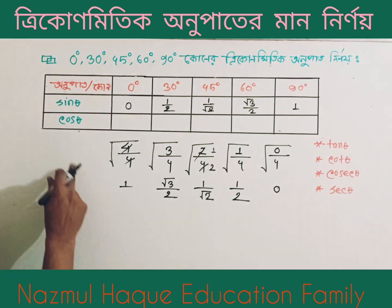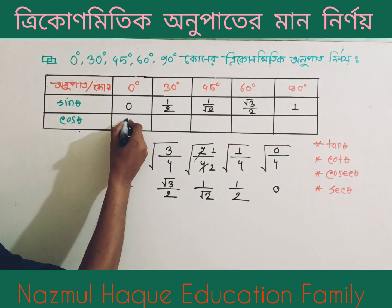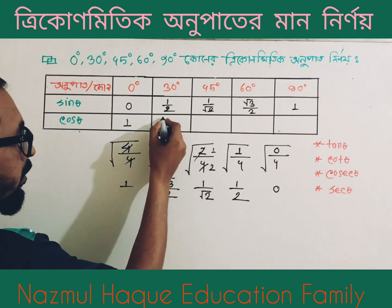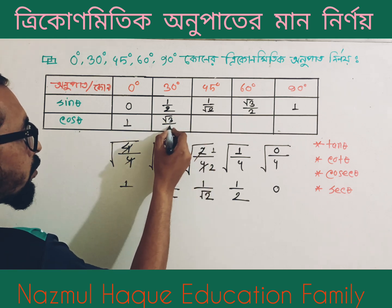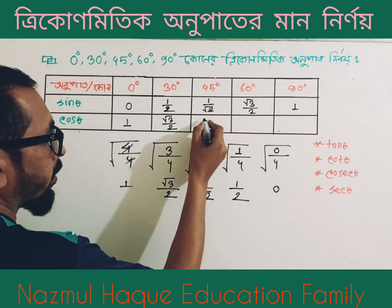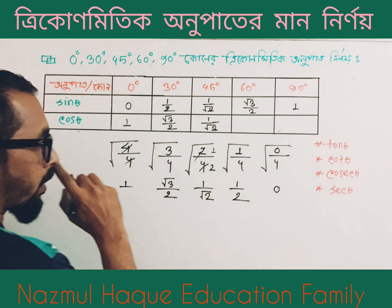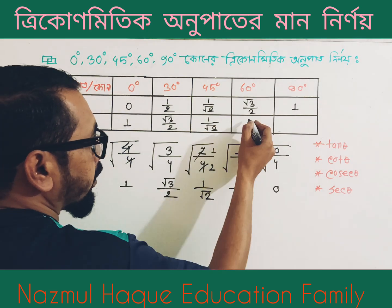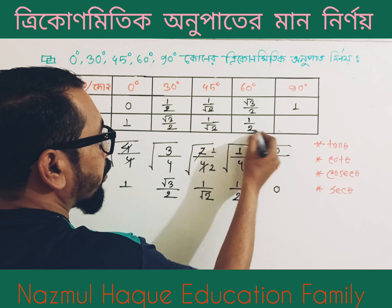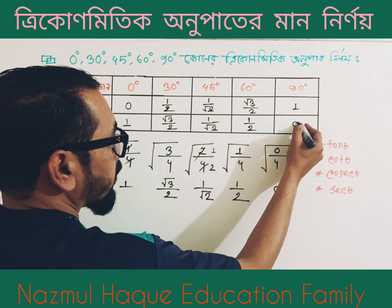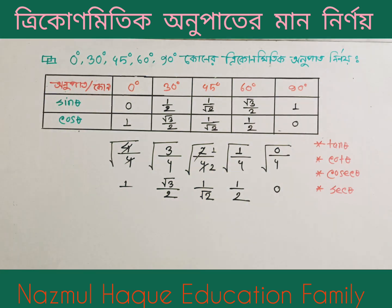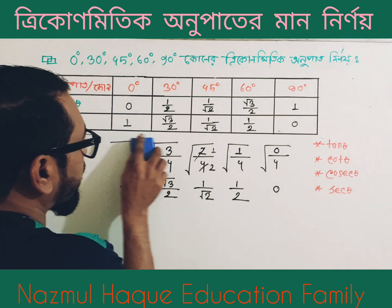So cos 0 degree is 1. Cos 30 degree is root 3 divided by 2. Cos 45 degree is 1 divided by root 2. Cos 60 degree is half. Cos 90 degree is 0.